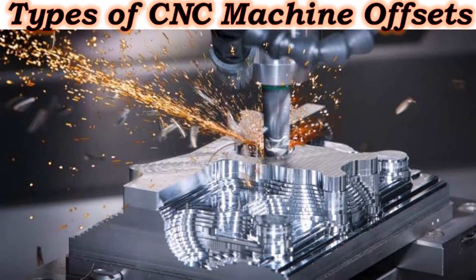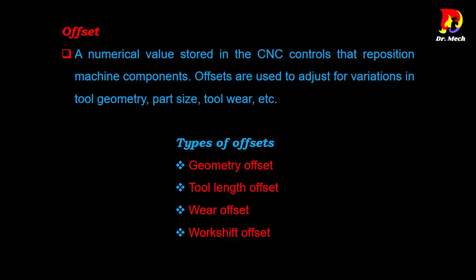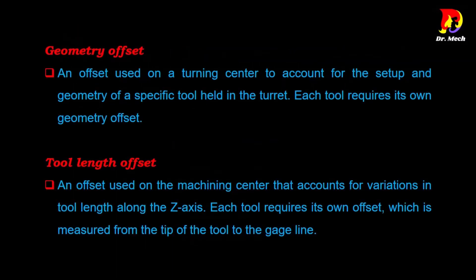Welcome, friends. In this video you can understand the types of offsets used in CNC machines. An offset is a numerical value stored in the CNC controls that repositions machine components. Offsets are used to adjust for variations in tool geometry, part size, tool wear, etc. The types of offsets are: geometry offset, tool length offset, wear offset, and work shift offset.